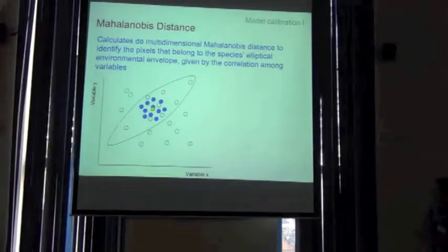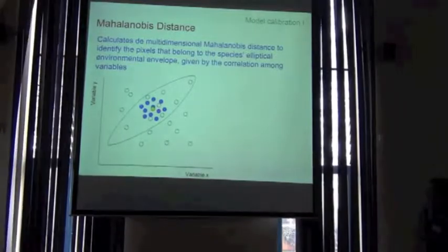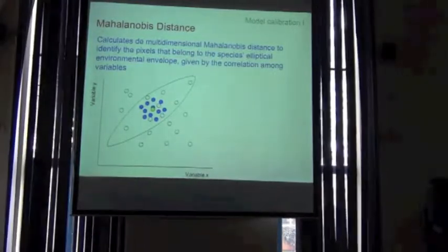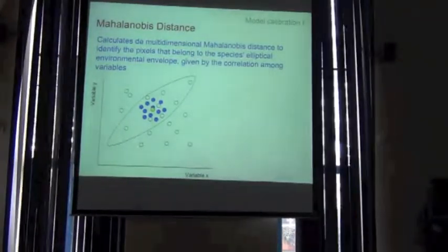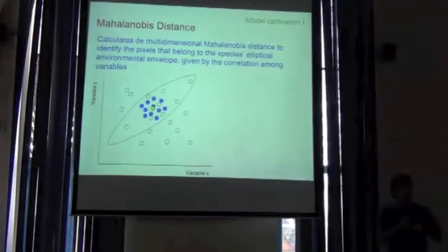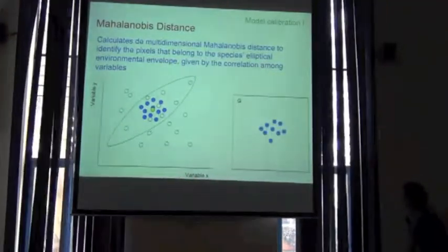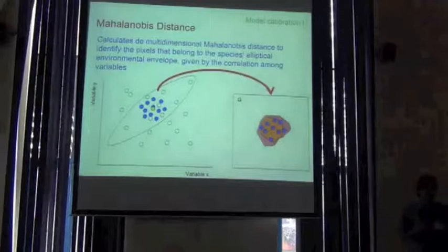So in this case, for example, the distance of this point to the mean is closer than this point to the mean, because of this shape produced by the collinearity of the variables. But it's exactly the same idea.